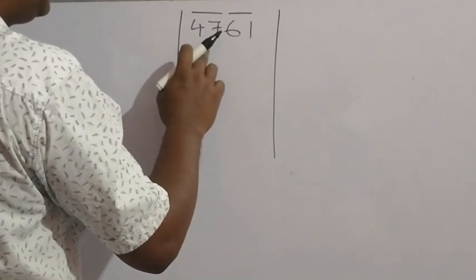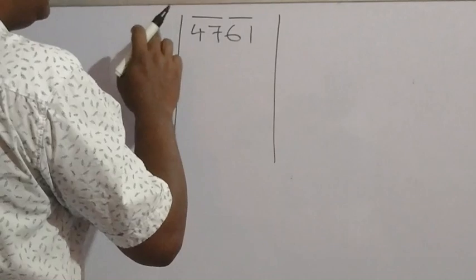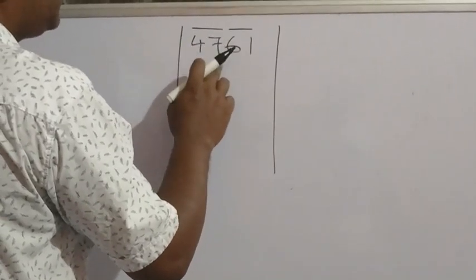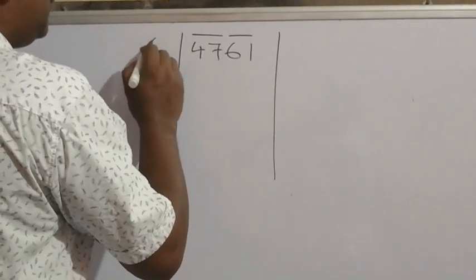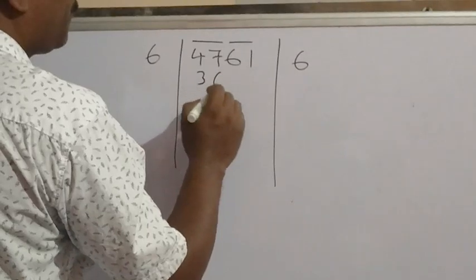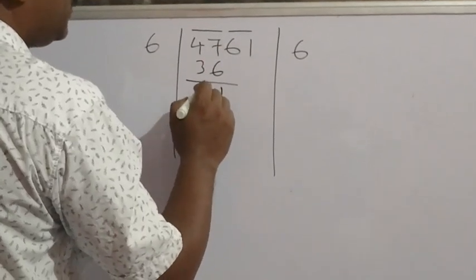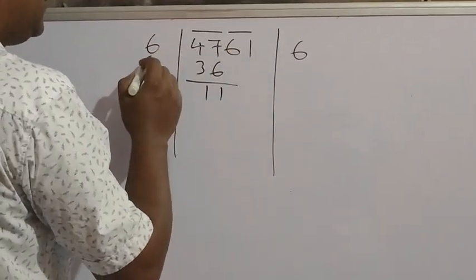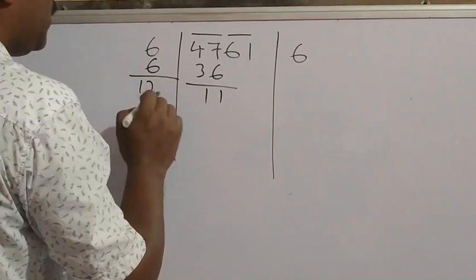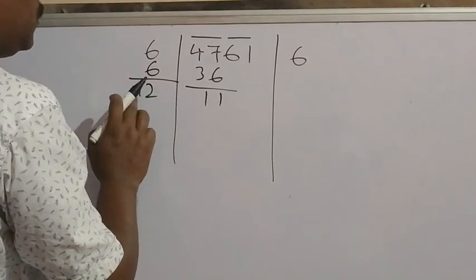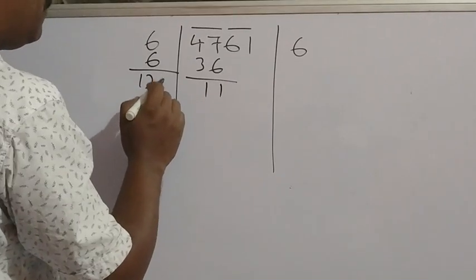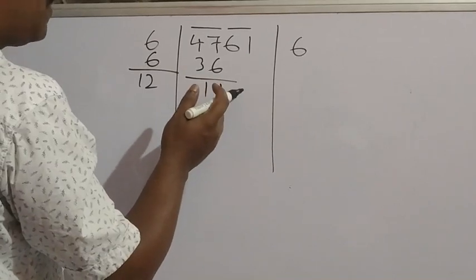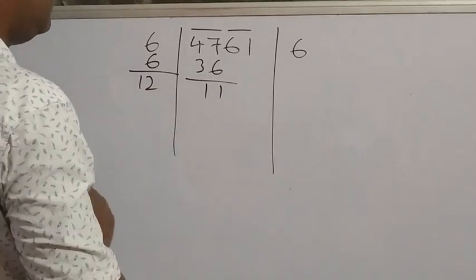So we take 6: 6 × 6 = 36. Subtract: 47 − 36 = 11. The quotient digit is 6, so we add 6 + 6 = 12 in the divisor. Now it is a 3-digit number: 12_, where the unit place is vacant. Bring down the next pair 61, making the remainder 1161. We need to find what digit in the unit place of 12_ gives a product equal to or less than 1161.